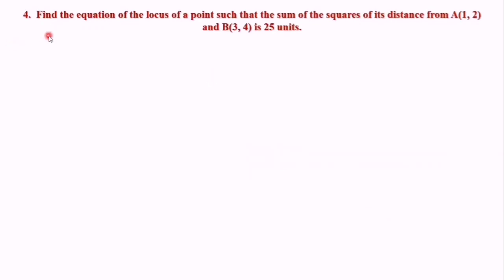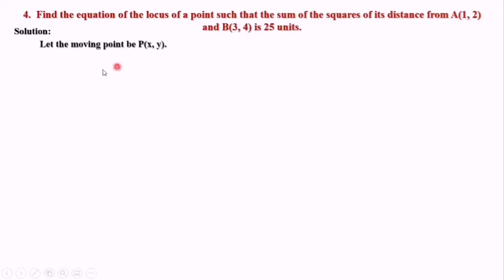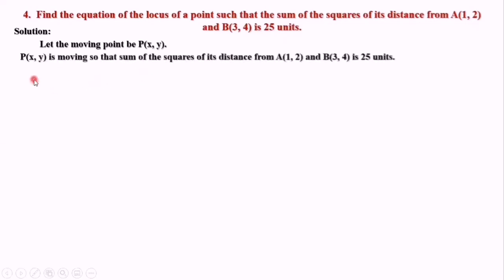Another example, number 4: Find the equation of the locus of a point such that the sum of squares of its distance from A and B is always 25 units. Here we need a moving point, so let it be P(x, y). P(x, y) is moving so that the sum of squares of its distance from A and B is 25 units. Here A and B are two fixed points.